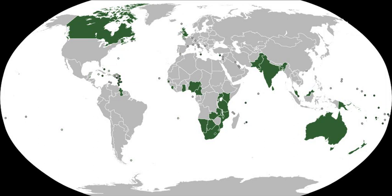The Commonwealth Foundation is an intergovernmental organization, resourced by and reporting to Commonwealth governments, and guided by Commonwealth values and priorities. Its mandate is to strengthen civil society and the achievement of Commonwealth priorities — democracy and good governance, respect for human rights and gender equality, poverty eradication, people-centred and sustainable development, and to promote arts and culture. The foundation was established in 1965 by the heads of government. Admittance is open to all members of the Commonwealth, and in December 2008 stood at 46 out of the 53 member countries. Associate membership has been granted to Gibraltar. The foundation is headquartered in Marlborough House, Pall Mall, London.